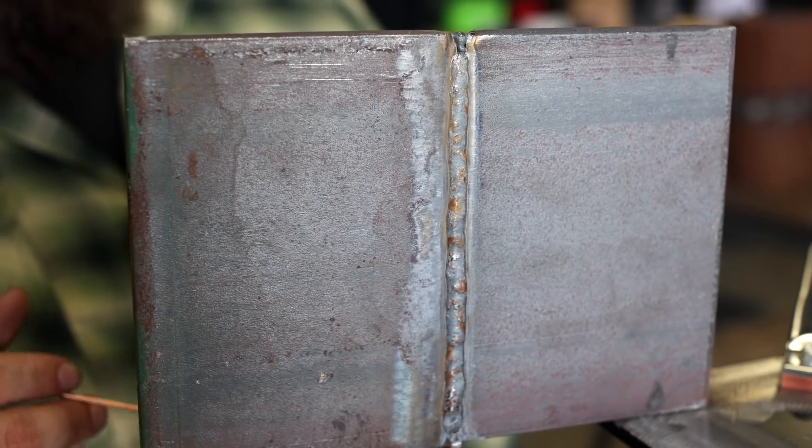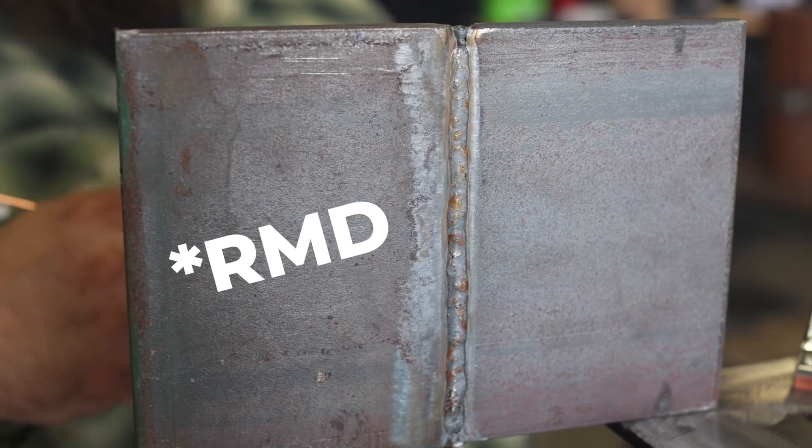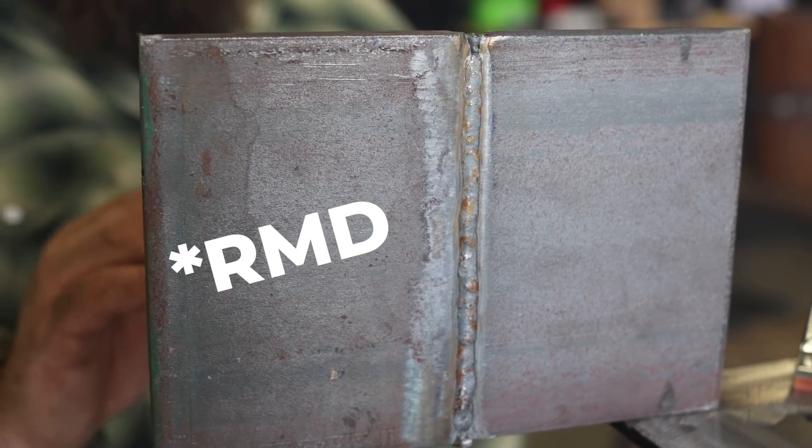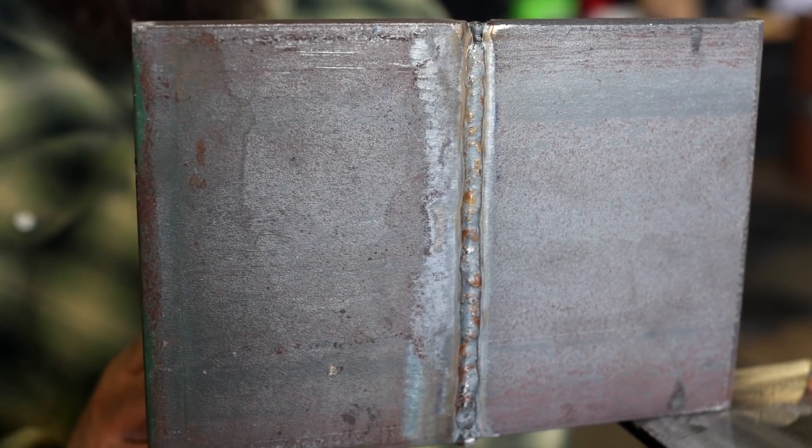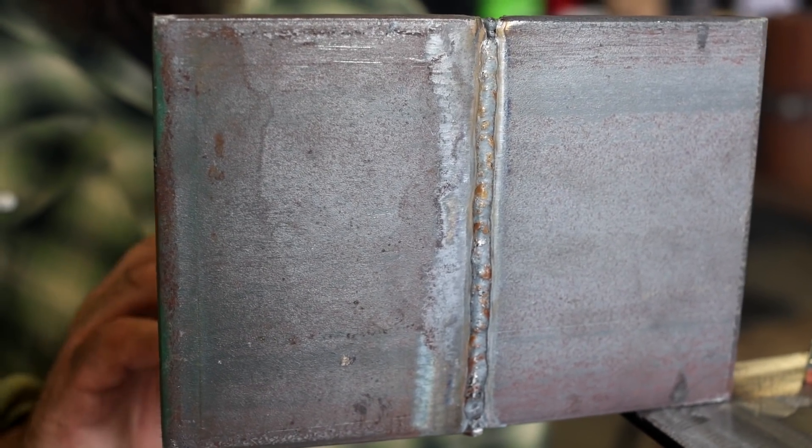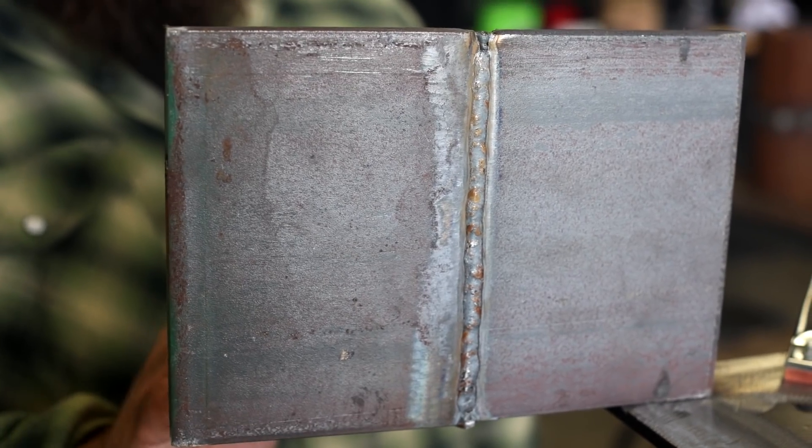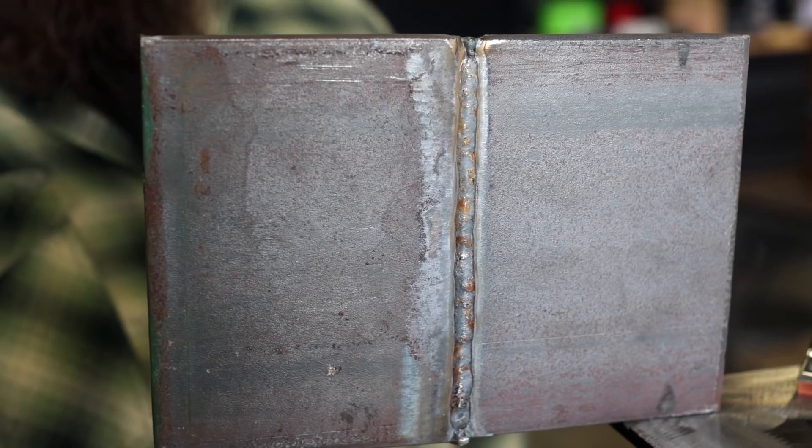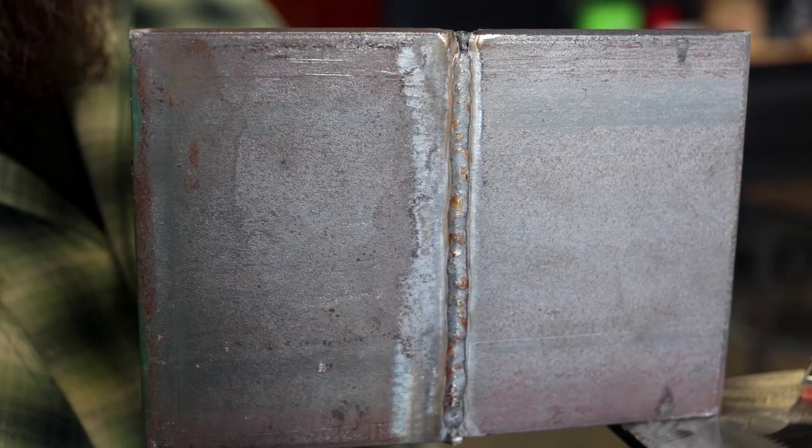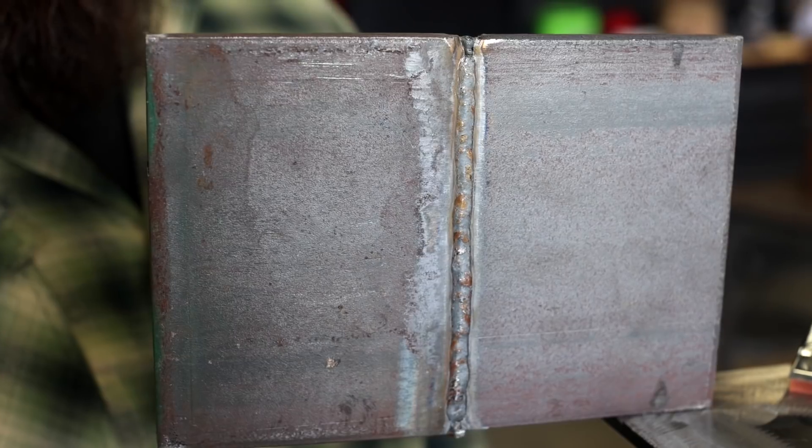But on this one, on a short arc hard wire MIG root going downhill, you want to stay on the leading edge and only weave if you have to. You want to stay right in the middle and feed that puddle and you'll get internal reinforcement on pipe, external on plate.